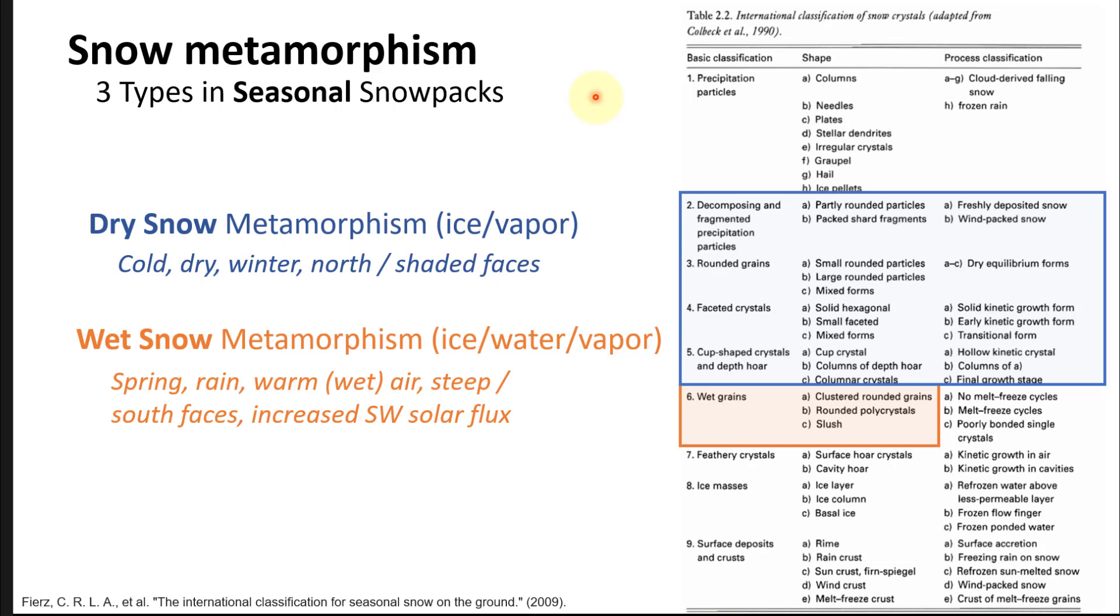We typically see wet snow metamorphism once you have melting, once you have some liquid water present. That can be intermittent, a diurnal event where you have warmth during the day heated on sunny aspects with some liquid water introduction that might refreeze at night. Or it could be that you have persistent liquid water in the snowpack, late into the season with significant or rapid melting, and then you have wet grains.